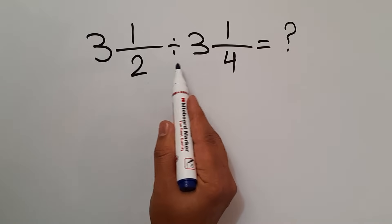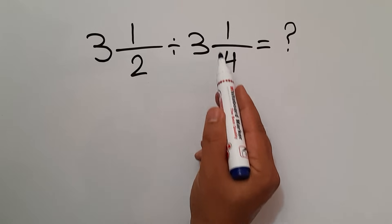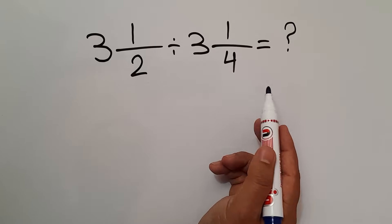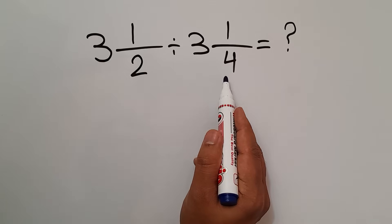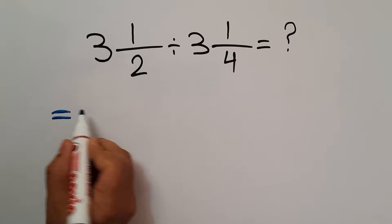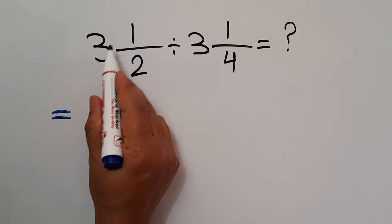First of all, let's convert these two mixed numbers to improper fractions. So 3 times 2 gives us 6, and 6 plus 1 equals 7. So 7 over 2 divided by 3 times 4 gives us 12, and 12 plus 1 equals 13.